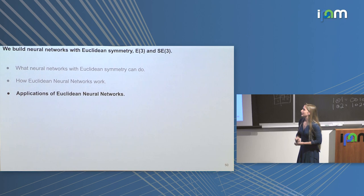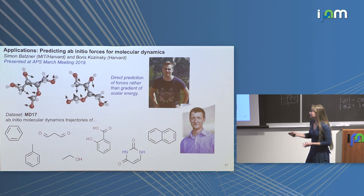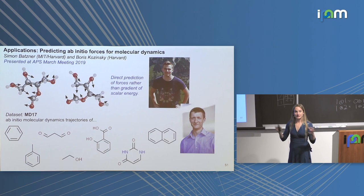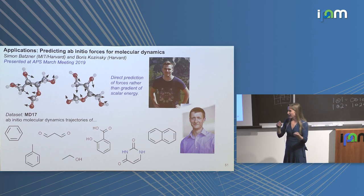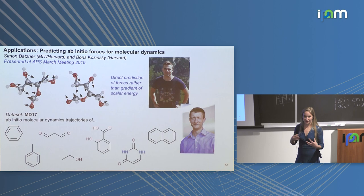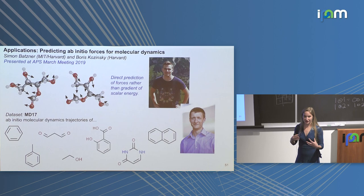In the last few minutes, I'll cover applications. My collaborators Simon Batzner in Boris Kozinsky's group at Harvard have been using these networks for molecular dynamics on the MD-17 dataset — trajectories of various molecules. They have cool results showing they can reconstruct all the vibrational properties of these molecules. Their paper is currently being written up.